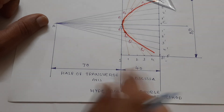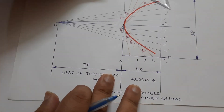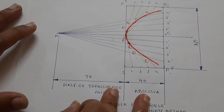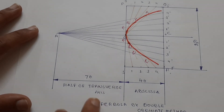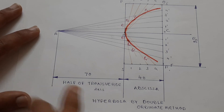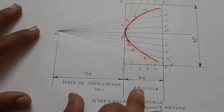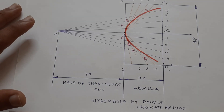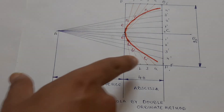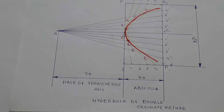Double ordinate method, abscissa method, and transverse axis method — that means this is called the transverse axis method. The other one is specific to double ordinate and abscissa method. So either double ordinate method or abscissa method — we will draw it neatly.